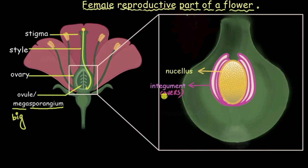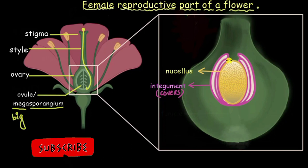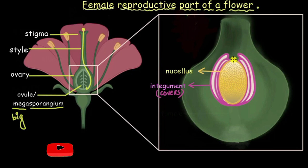They are covers that coat the nucellar cells. But if you can observe closely you will see that a small portion of the nucellar cells or the nucellar cell mass is left uncovered. Now can you guess why?